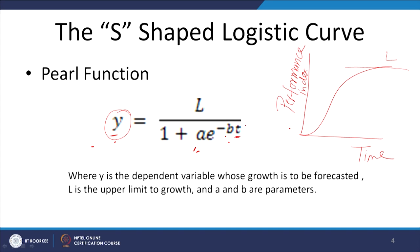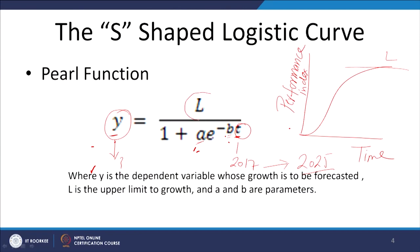You can calculate the value of y at a particular time t. For example, if you know the performance index value in 2017 and you know the values of a and b from historical data, substituting t = 2025 instead of 2017 lets you calculate what the performance index will be in 2025. The success of the Pearl function depends on carefully selecting the upper limit L of the performance index.